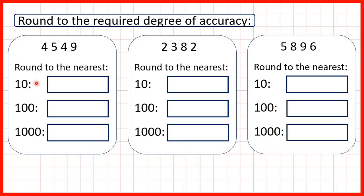To round to different place values, we need to remember that on the end we have our ones, and then our tens, hundreds, and thousands digits. So, to round to the nearest ten, first of all, we need to find our tens digit, and I like to circle it. Then, to decide whether we need to round up or down, what we do is underline or look at the digit to the right. Because we're rounding to the nearest ten, we've circled our tens and underlined our ones digit.